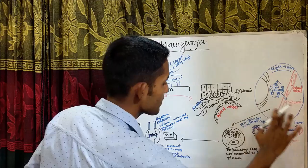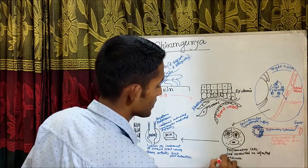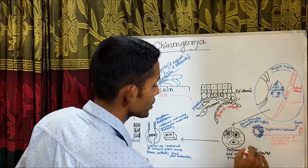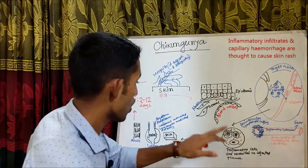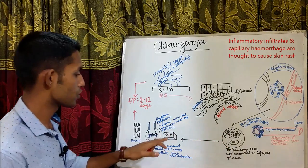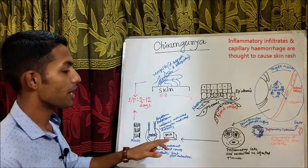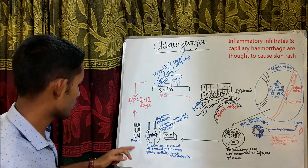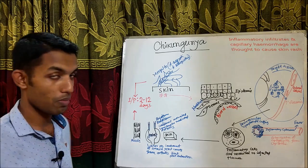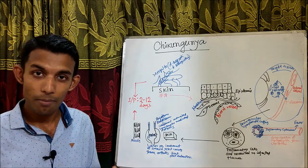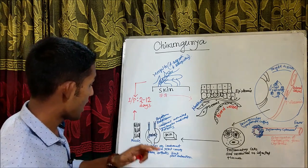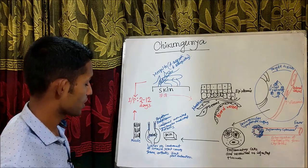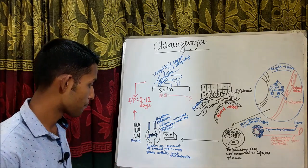After all these events, inflammatory cells are recruited to the infected tissues. When they go to the skin, they may cause maculopapular rash; when they go to the muscle, they may cause myalgia, backache, or back pain; and when they go to the joints, they cause arthritis or arthralgia.